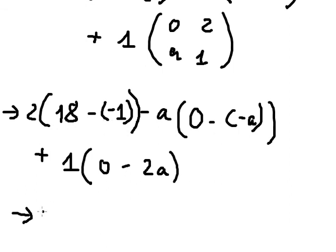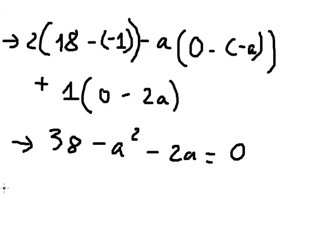So this gives us 2 times 19, which is 38, minus a squared minus 2a. And now we have this equation: 38 minus a squared minus 2a equals 0.